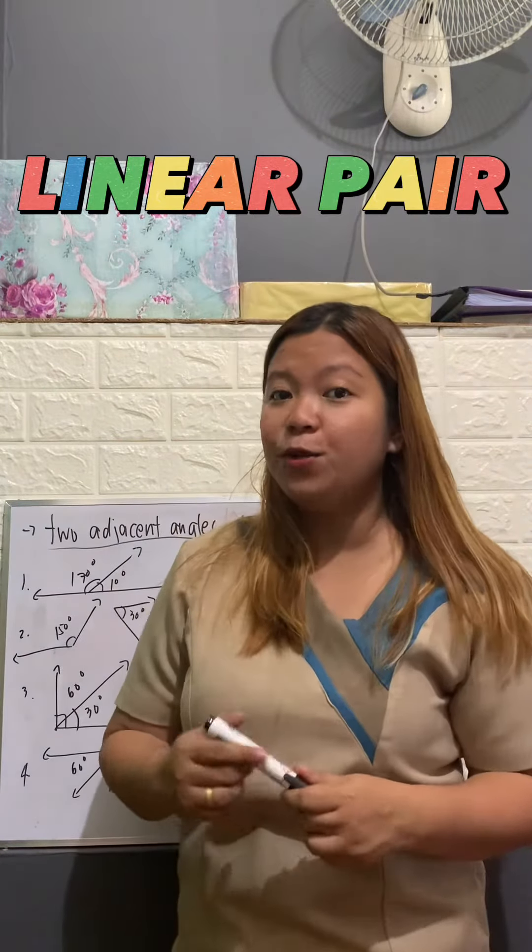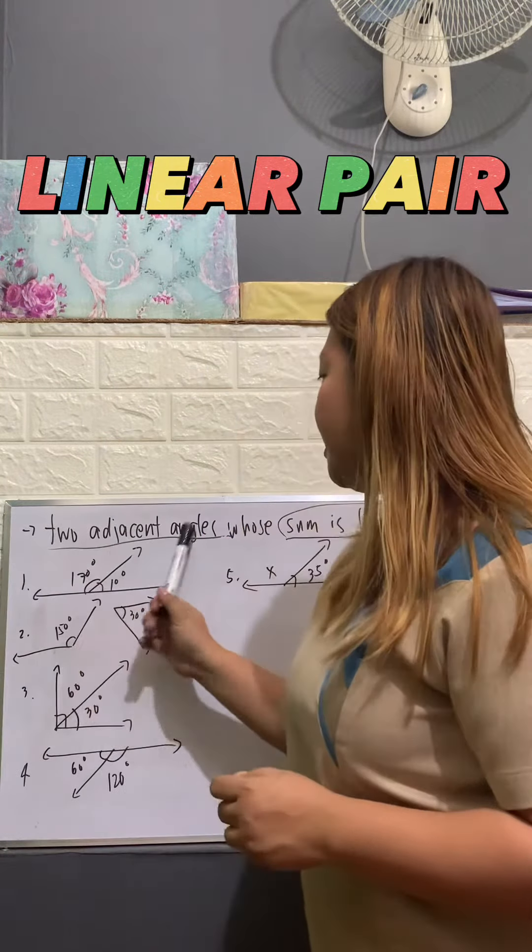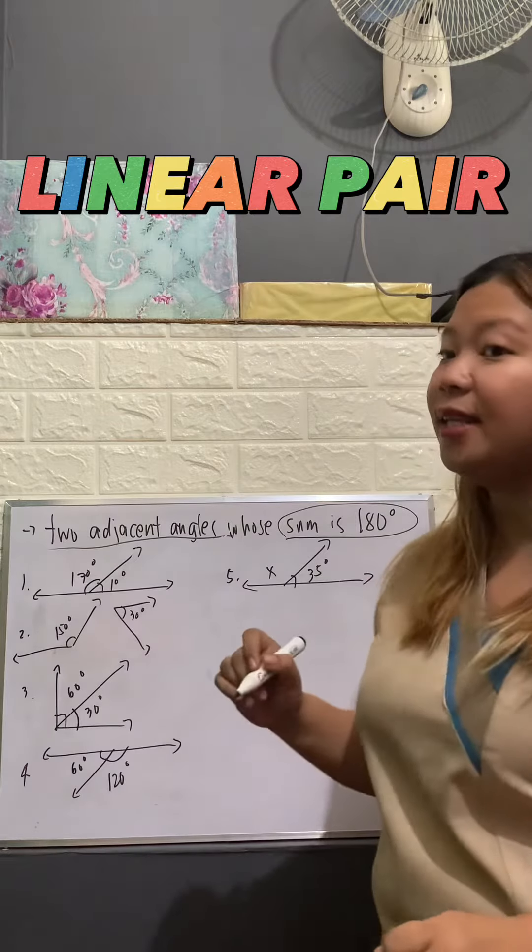Let's talk about linear pair. Linear pair is two adjacent angles whose sum is 180 degrees.